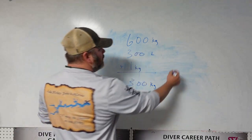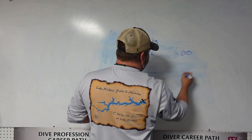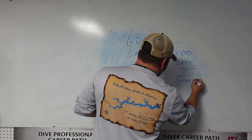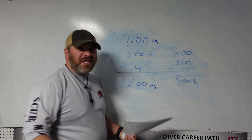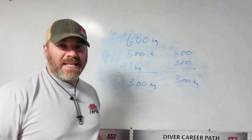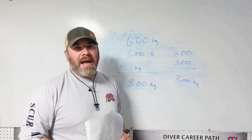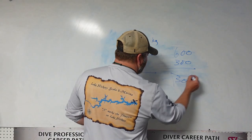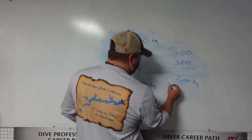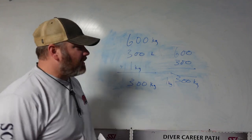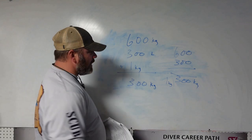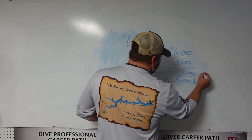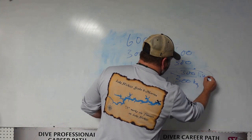I simply subtract that from its beginning weight: 600 minus 300 gives me 300 kilograms, which in this particular situation is the answer. But we want to finish the math out, so I divide it by the one kilogram per liter weight of water, and of course 300 divided by one comes up to 300 liters of water that needs to be displaced.